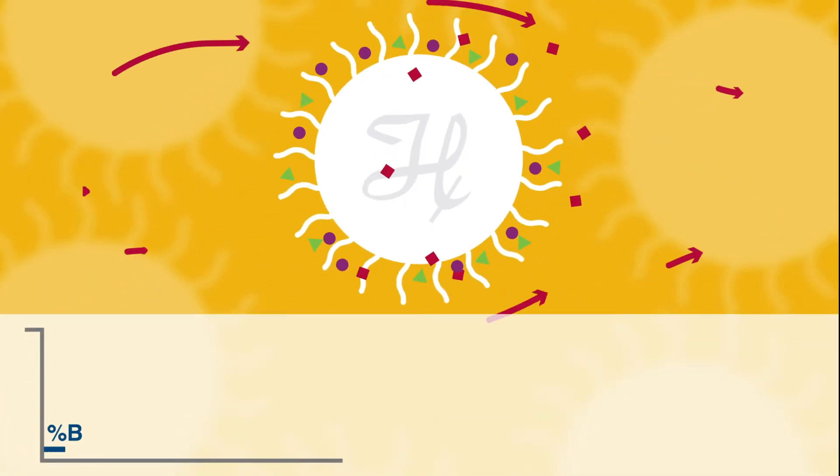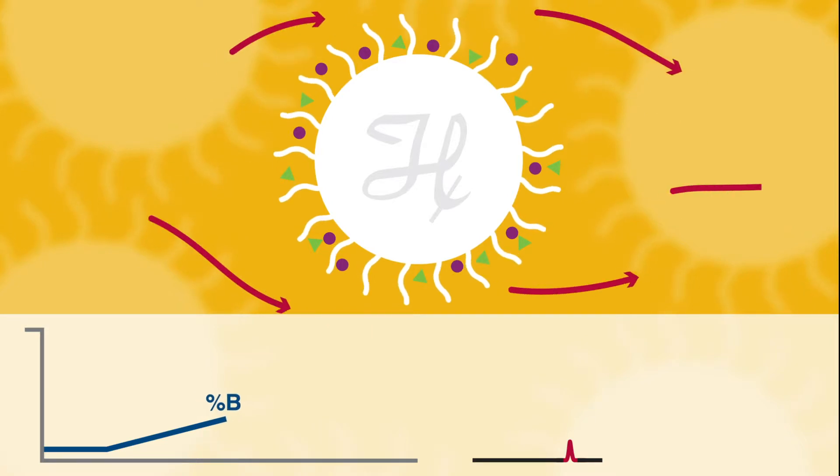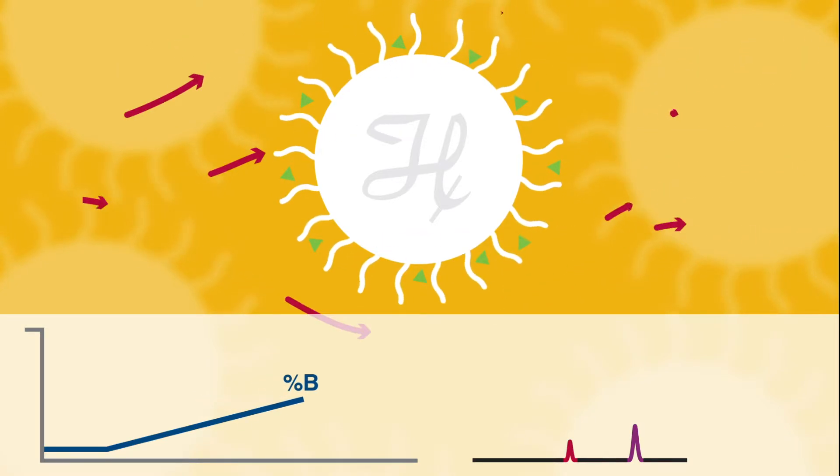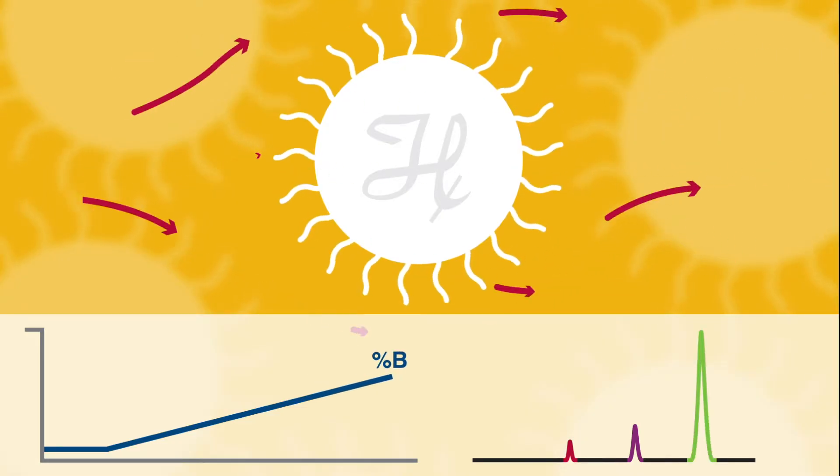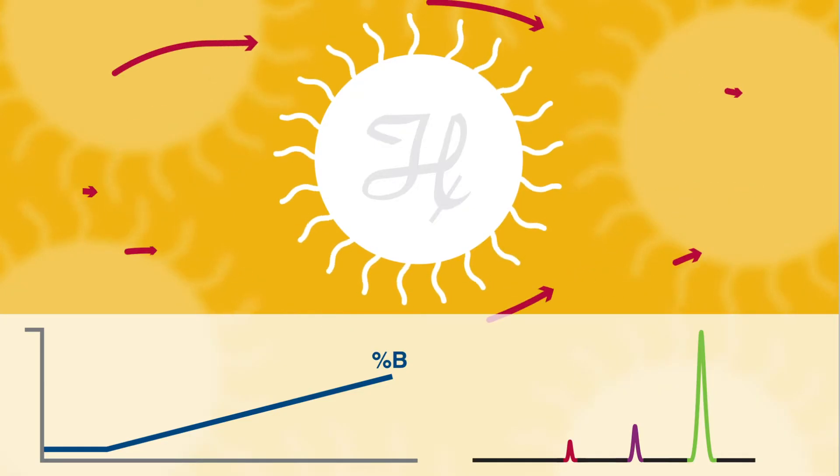Unlike other polymer columns, the C18 surface modification imparts superior mass transfer kinetics for high efficiency separations and excellent mechanical stability. The high loading capacity and greater resolving power of the PRP C18 makes it possible to achieve baseline resolution between the target oligos and failure sequences.